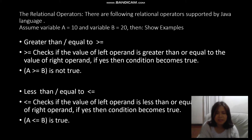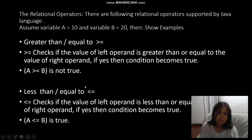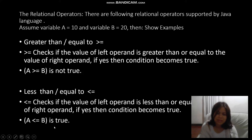Greater-than-or-equal-to can satisfy either condition. It checks if the left operand is greater than or equal to the right operand — if yes, the condition is true. For example, 10 >= 20 is false. Less-than-or-equal-to checks if the left operand is less than or equal to the right operand — for example, 10 <= 20 is true.